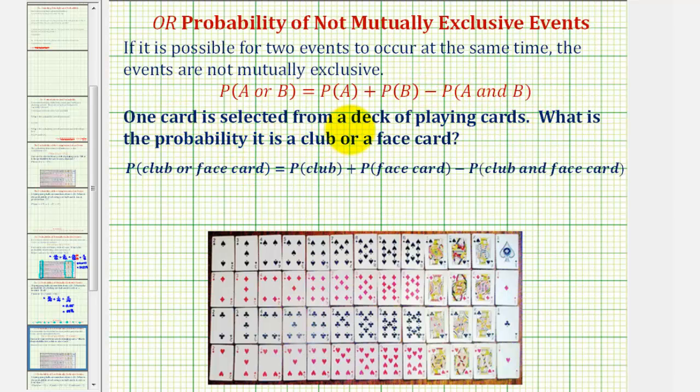So first, one card is selected from a deck of playing cards. What is the probability it is a club or a face card?